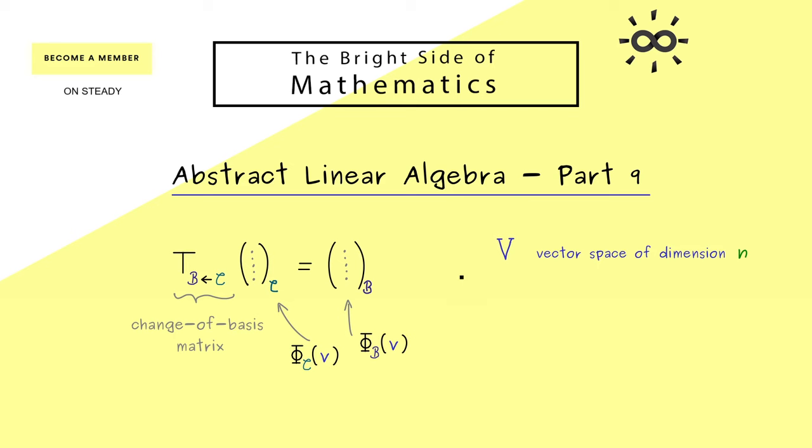So now we know, if the abstract vector space V has dimension n, then this change of basis matrix is an n times n matrix. Moreover, we also know it's an invertible matrix. Of course, this makes sense, because we should be able to translate back again.